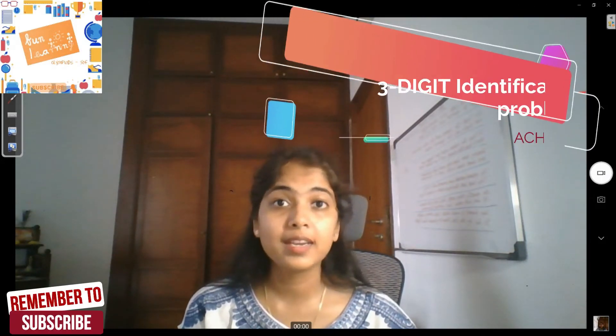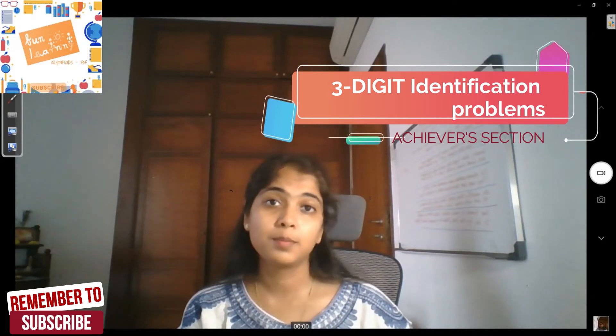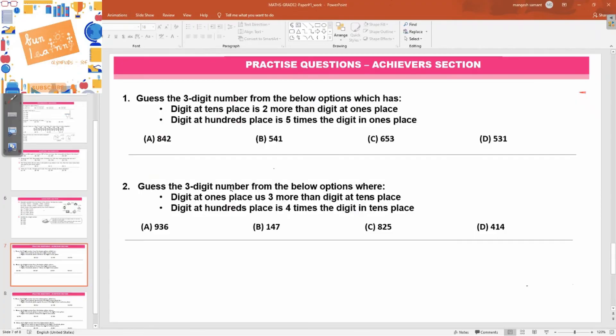Well done, kids. So you've solved the sample paper. I'm going to give you a few more practice questions on identifying three-digit numbers, which is a popular choice in this section. Let's go and look at our questions. I'm looking at the first question which says: guess the three-digit number from the below options which has these conditions. Let me write my three digits: hundreds, tens, and ones.